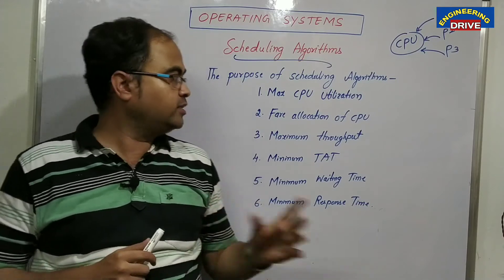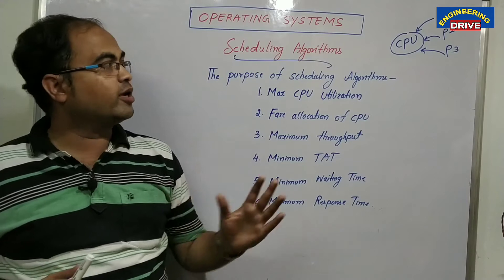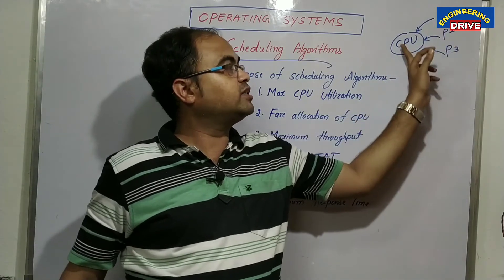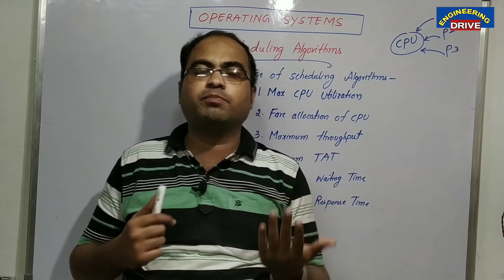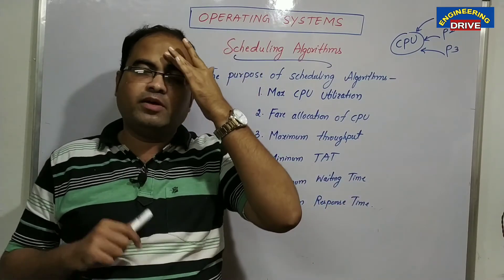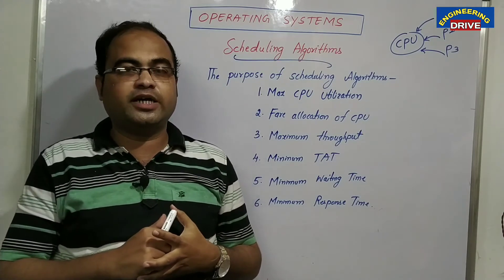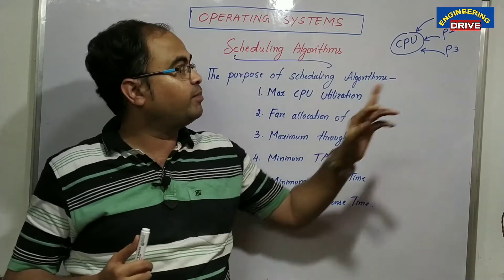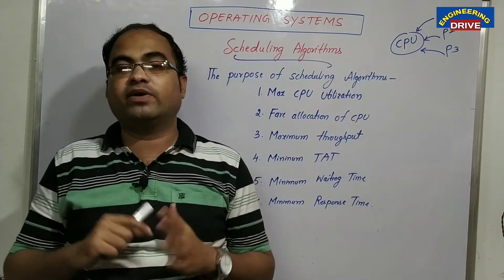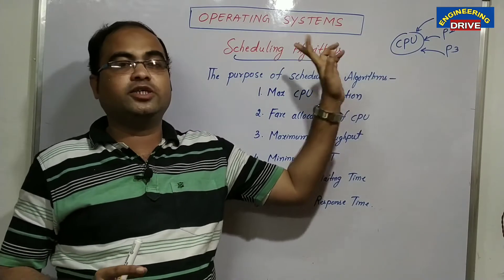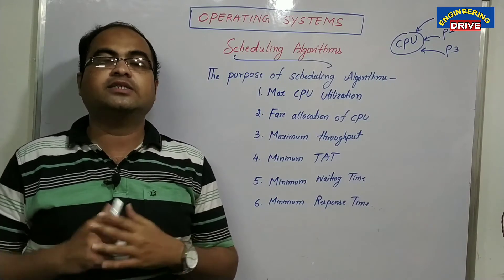The second advantage of scheduling is fair allocation of CPU. Fair allocation means that if P1 got the chance for execution, sometimes P2 and P3 may not get the chance and will simply be waiting. To remove them from the waiting state, we use a proper scheduling algorithm, and then P1, P2, and P3 will get fair allocation — they will get equal chances for execution. That is the second advantage: fair allocation of CPU.